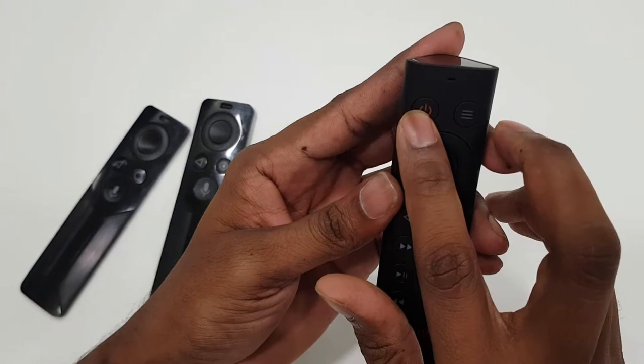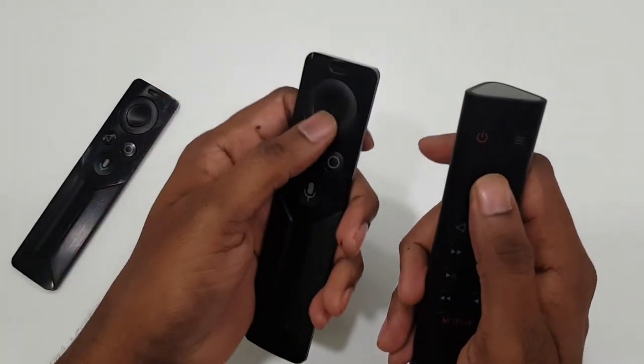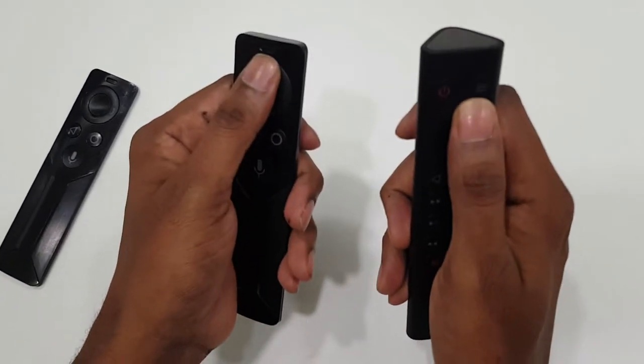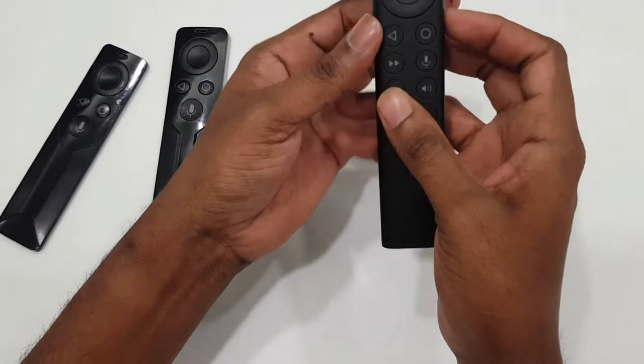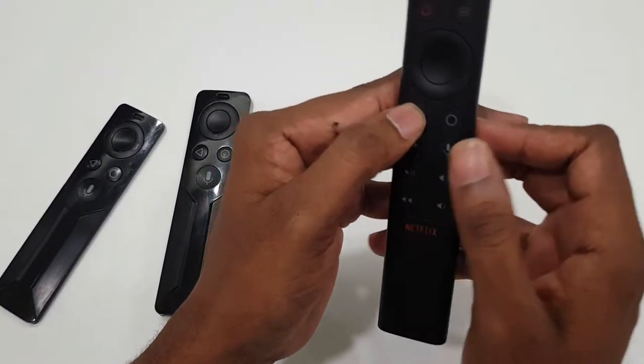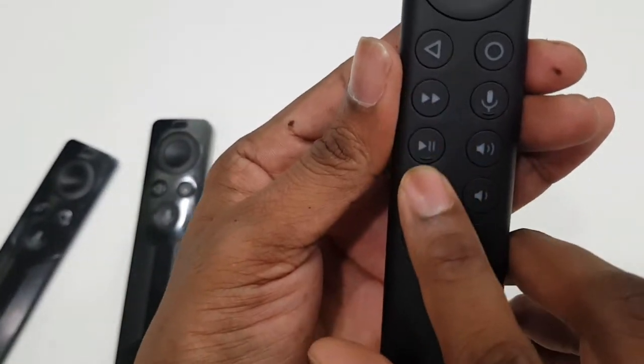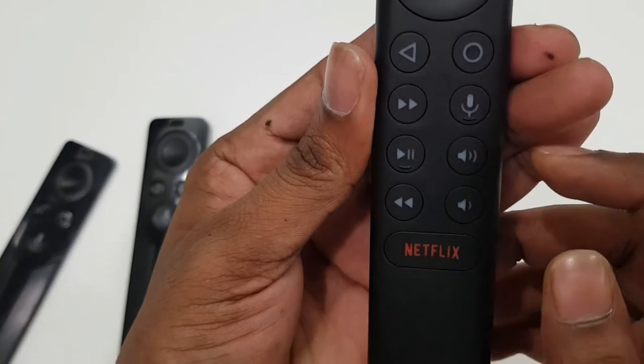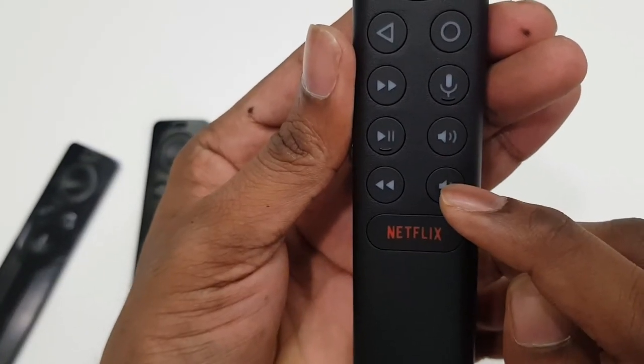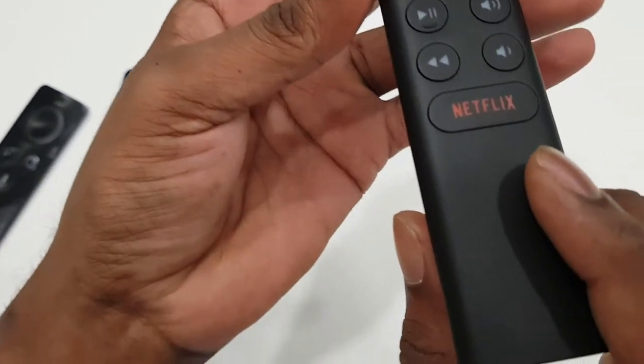Let me walk you through the buttons. This is the power, this is the menu, this is the navigation button and select button with left, right, and down. This is the back, this is the home, and these are the seek buttons. This is the mic button, then both volume control buttons, and here additionally you have Netflix.